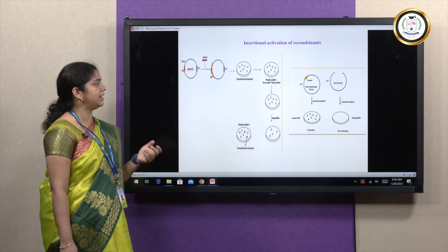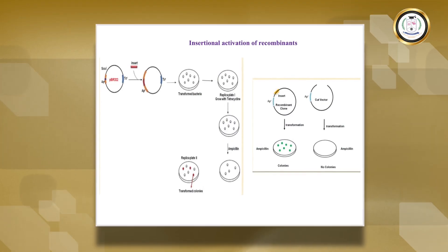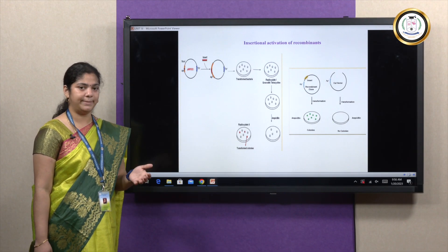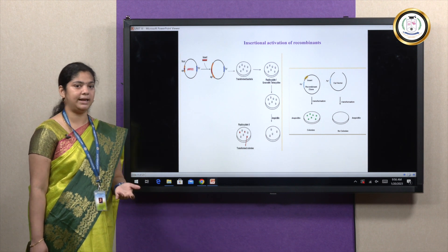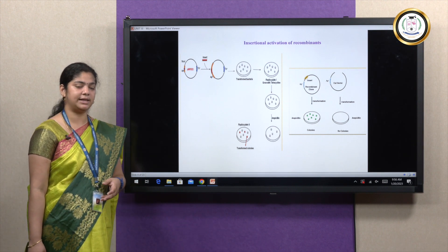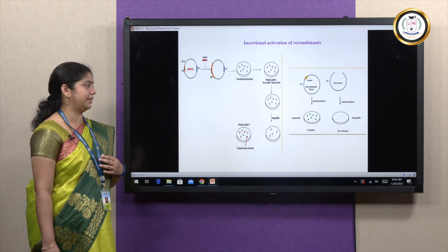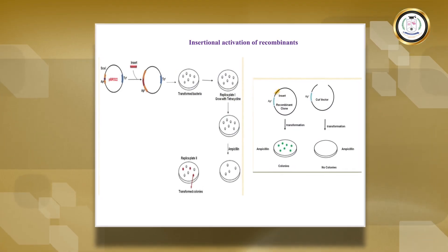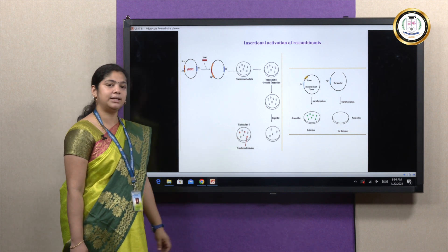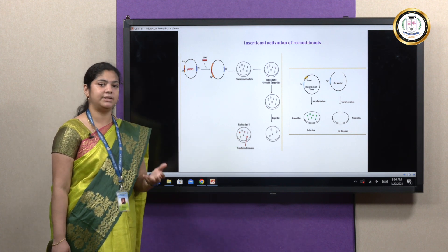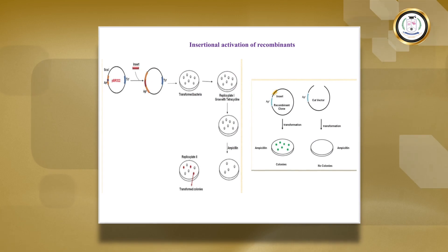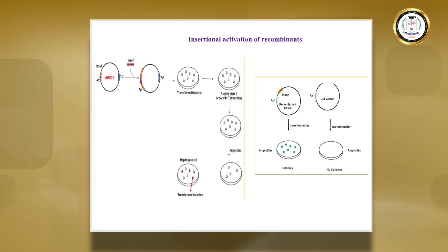Other methods include insertional activation, where a target gene is inserted into the vector. The plasmid and vector can be resistant to a particular antibiotic — it can be ampicillin or rifampicin. A commonly used method is ampicillin resistance, whereas for mammalian cells, hygromycin resistance is majorly used. Once the vector is cloned and the target gene is inserted and expressed, only the antibiotic-resistant colony survives on media containing that antibiotic.